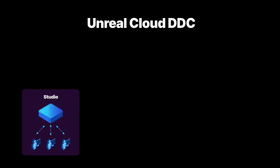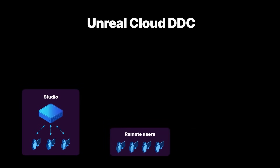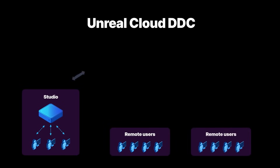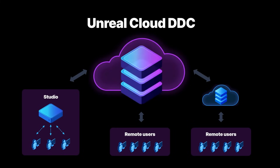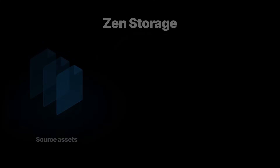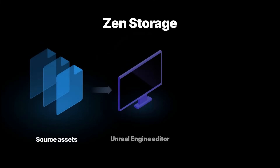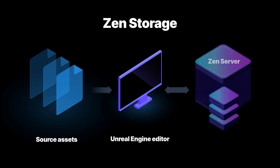New in this release is Unreal Cloud DDC, a self-hosted cloud storage system for the Unreal Engine-derived data cache. Designed for distributed users and teams, it enables you to efficiently share Unreal Engine cached data across public network connections. Our local DDC also now uses a new server architecture, offering improved data conditioning performance, faster load times and CI workflows, and other benefits.